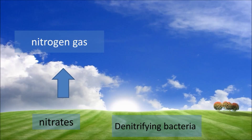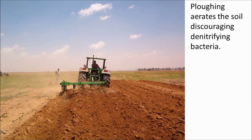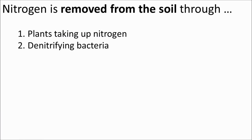In some conditions you can get denitrifying bacteria in the soil, and these break down nitrates and return the nitrogen to the air. Farmers don't want these bacteria — they want the nitrogen kept in the soil, not returned to the atmosphere. Denitrifying bacteria tend to live in waterlogged soil, so improving drainage reduces this effect and makes the soil more fertile. This is one reason why farmers aerate their fields by ploughing — turning the soil over prevents the build-up of stagnant wet soil where denitrifying bacteria could live.